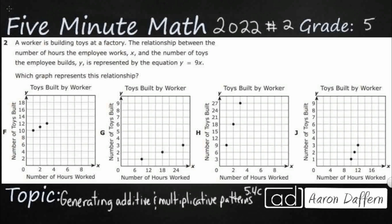So a worker is building toys at a factory and they give us the relationship here between the number of hours the employee works, so that's going to be x, the number of toys the employee builds, y, is y equals 9x. So we just need to find which graph best represents that. So that's our equation right there, y equals 9x.